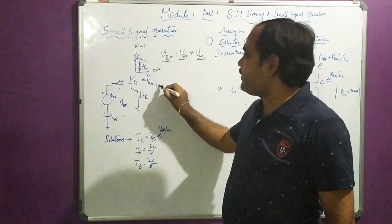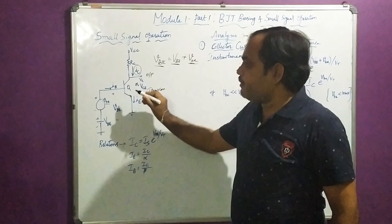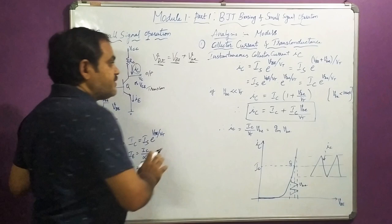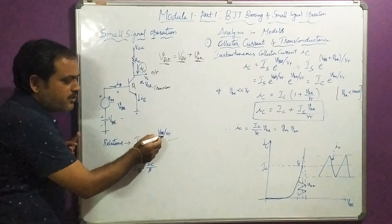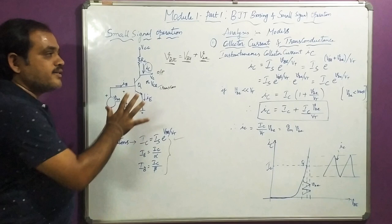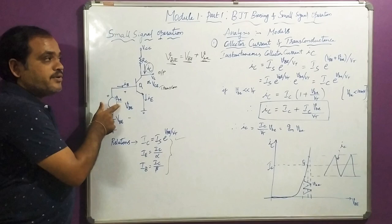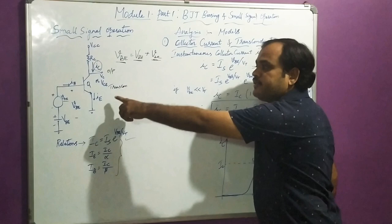Since the output is current and input is voltage, this is operating in transconductance mode, and the amplifier is called a transconductance amplifier. So we have IC by VBE. For this, I am going to consider the current-voltage relationship at the DC biasing point using the diode current-voltage equation. Capital IC = IS × e^(VBE/VT). Also, IE = IC/α and IB = IC/β. In today's session we are discussing the first model: amplification and whether it is a transconductance amplifier.